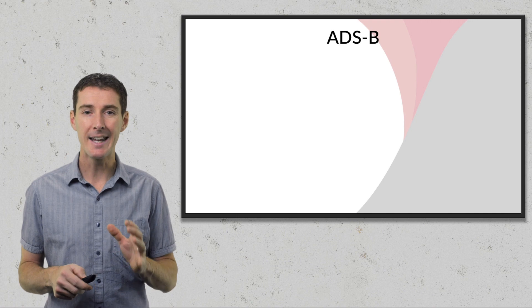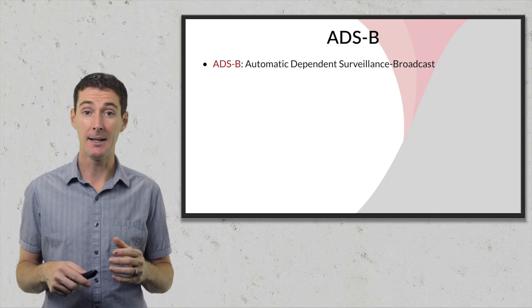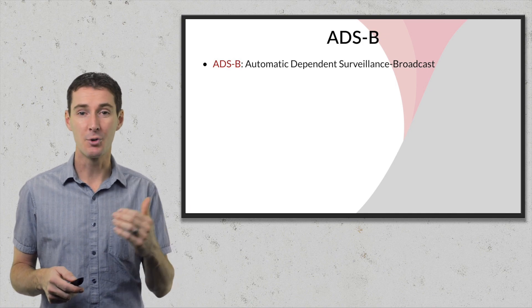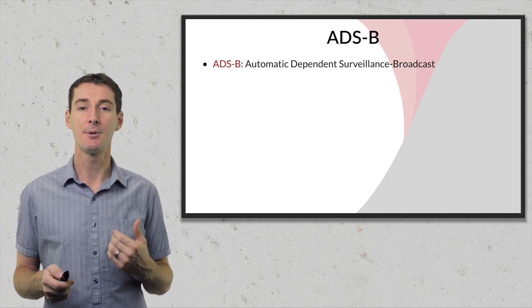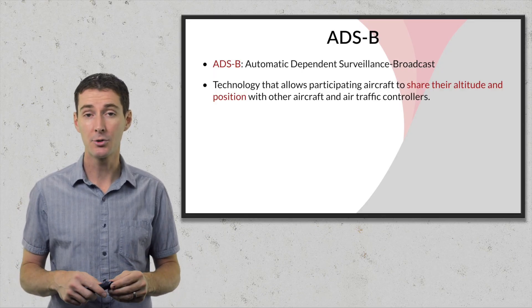So what is ADSB? ADSB stands for Automatic Dependent Surveillance Broadcast. This is a technology that was designed without drones in mind — it's something the FAA has been working on for a long time for manned aircraft. You'll find it in commercial flights or small aircraft at flight schools. This technology allows aircraft participating in ADSB to share their altitude and position with other aircraft and with air traffic controllers.